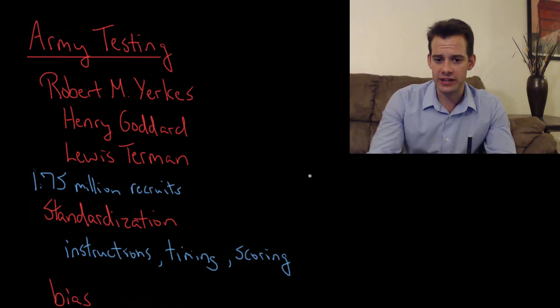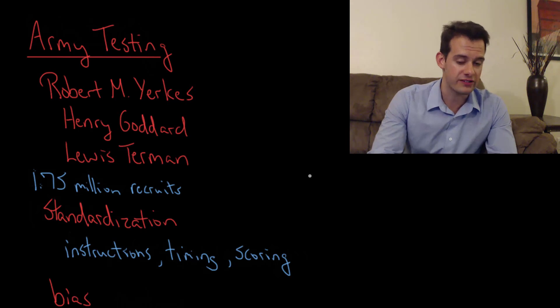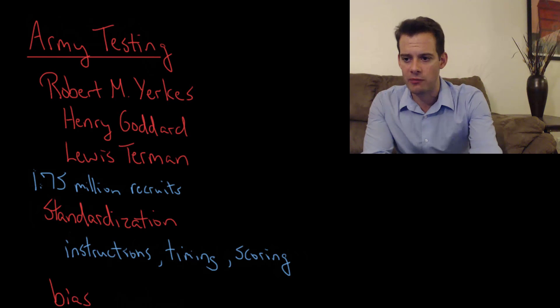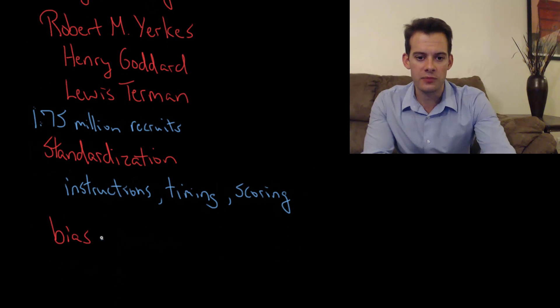It also allows the possibility of bias in the administration of the test. Given that this test was given to 1.75 million people, we can pretty well presume that most of the people administering this test were not trained psychometricians. This means that they may have allowed some personal bias into either the giving of instructions or the timing of sections or the scoring itself of the test. They may have had bias against certain groups and this may have influenced how they administered the test, which would then influence the scores of people from those groups. That's one area for bias, but we also see bias in terms of the questions themselves.